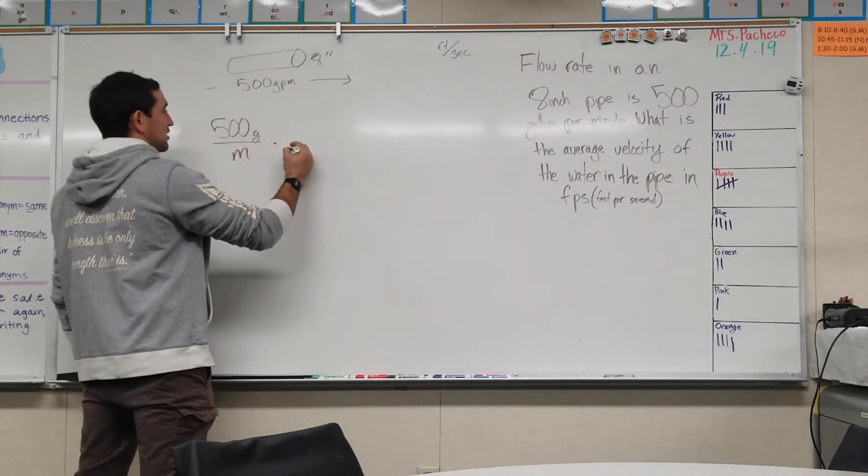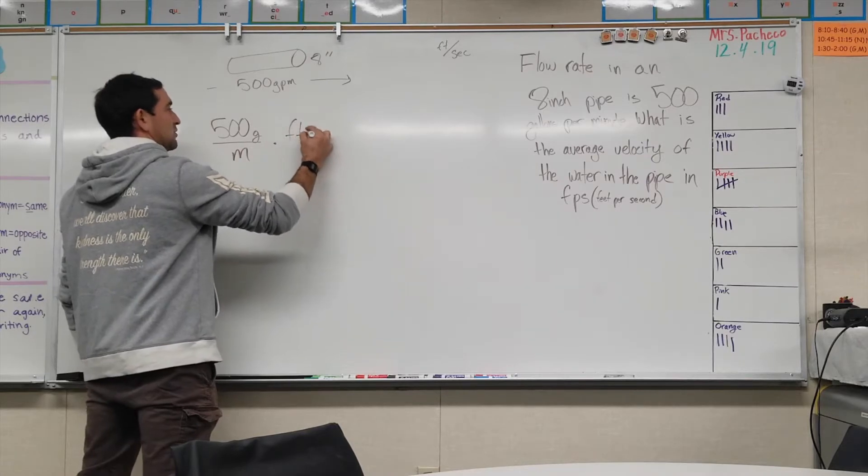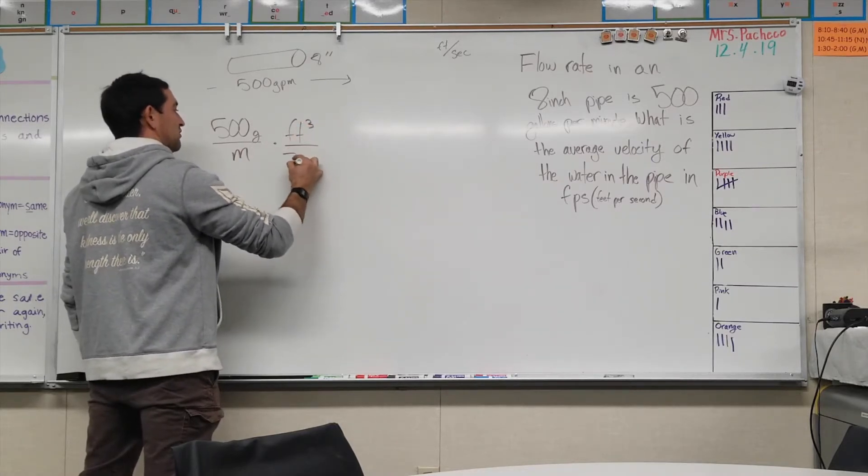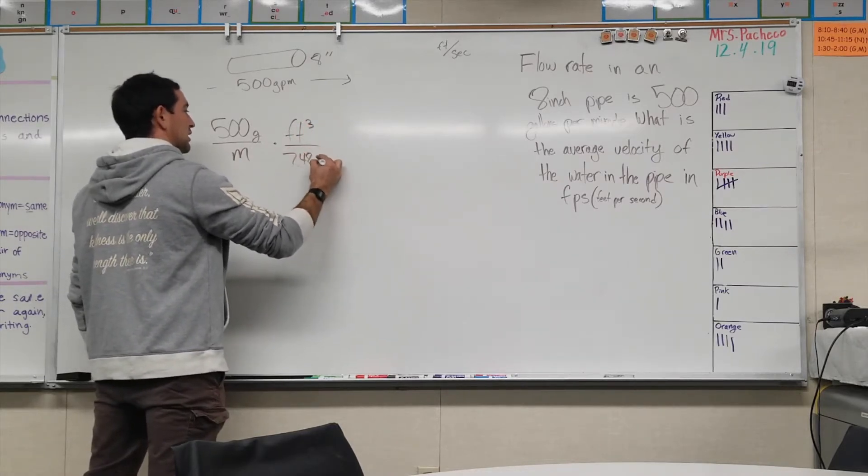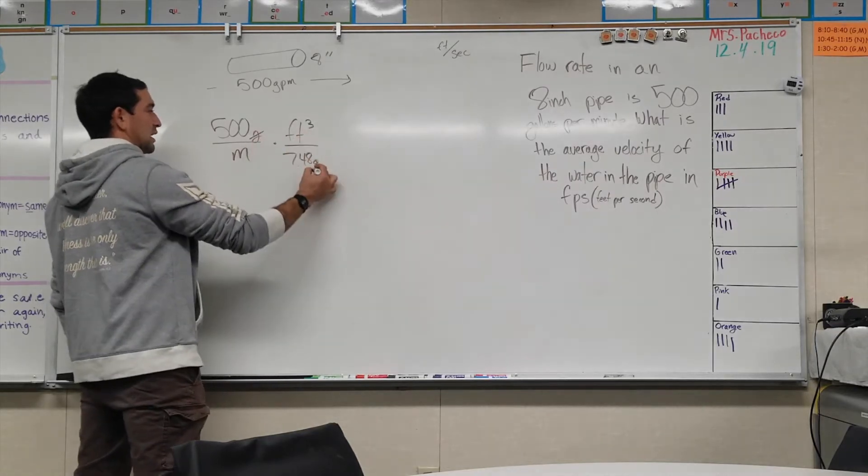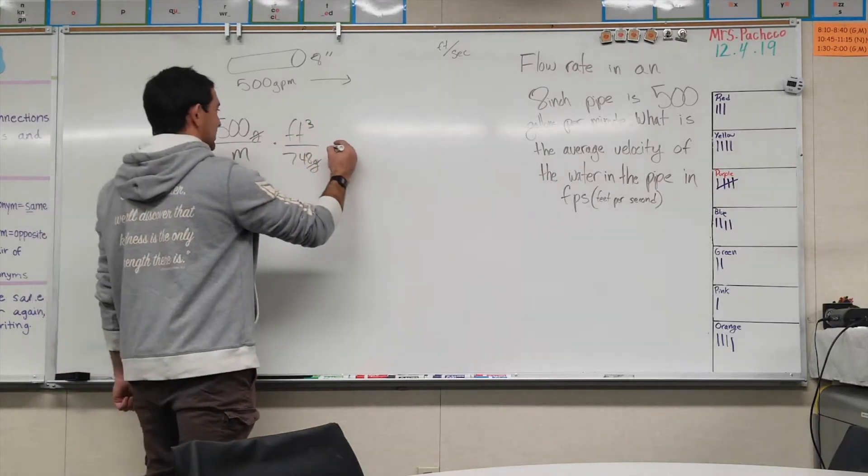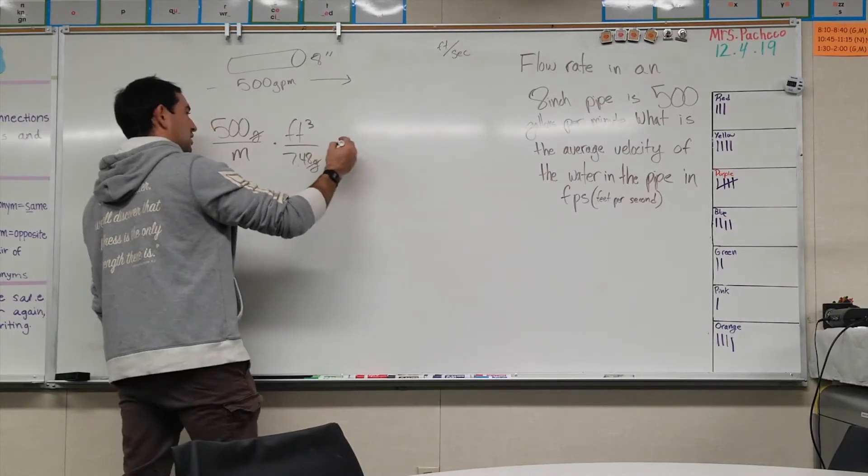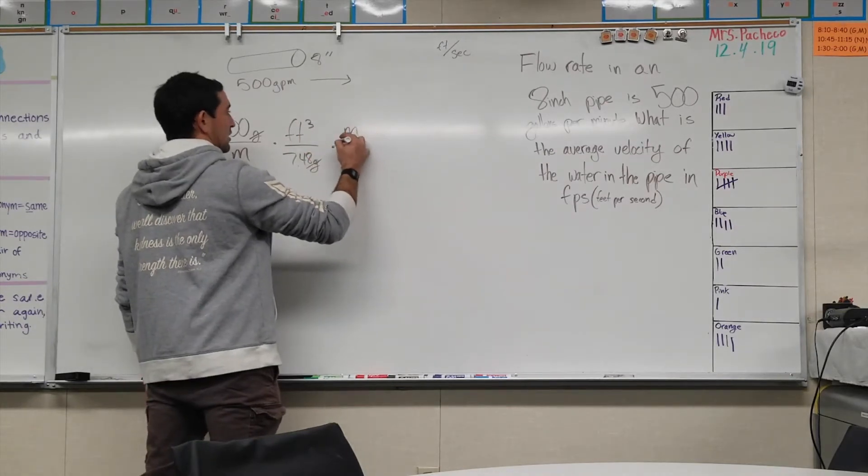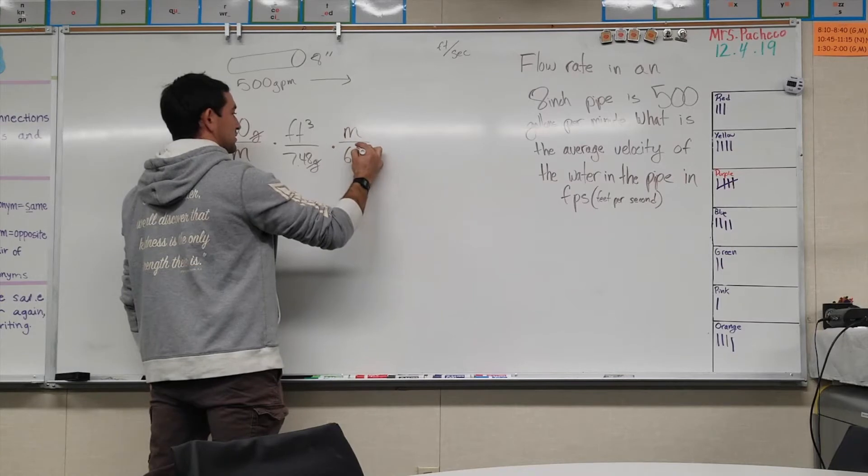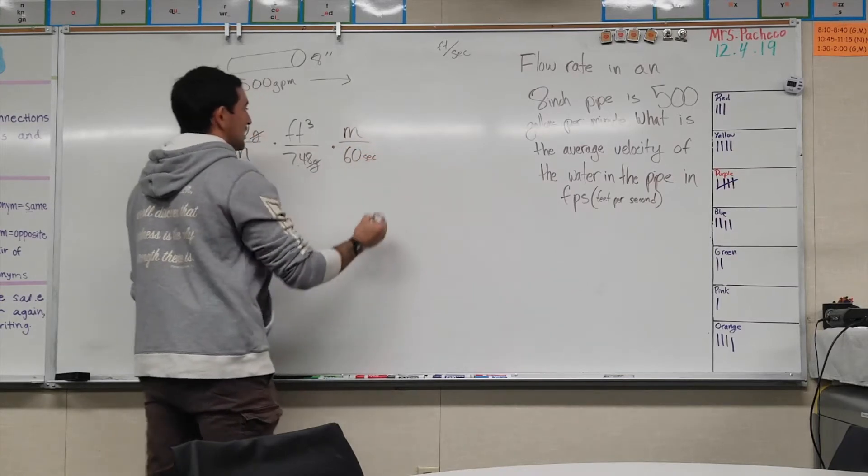For every cubic foot there are 7.48 gallons. There go the gallons. Now let's get rid of the minutes and get to seconds.